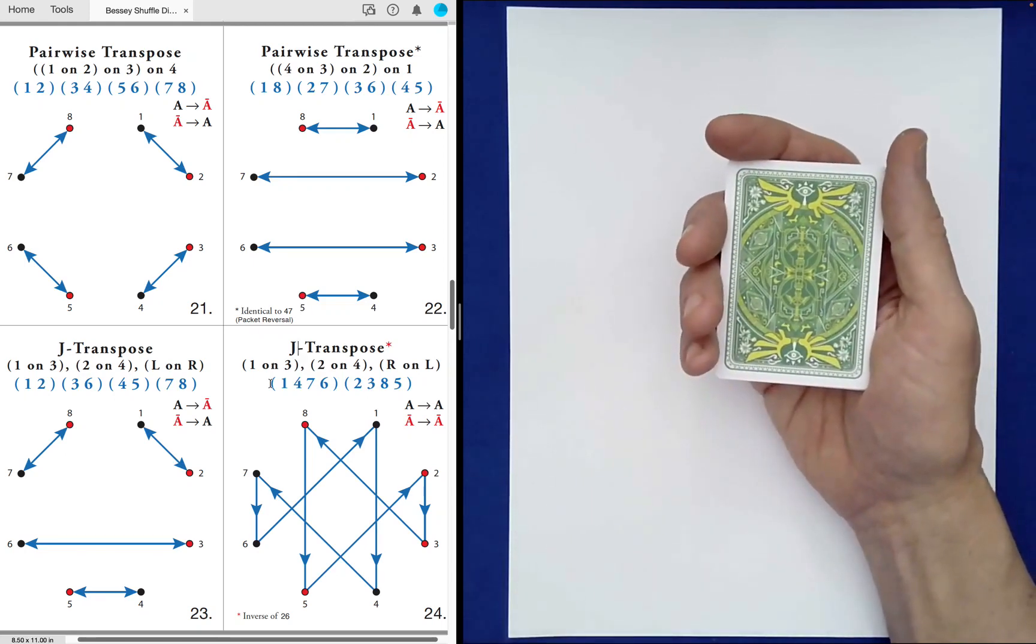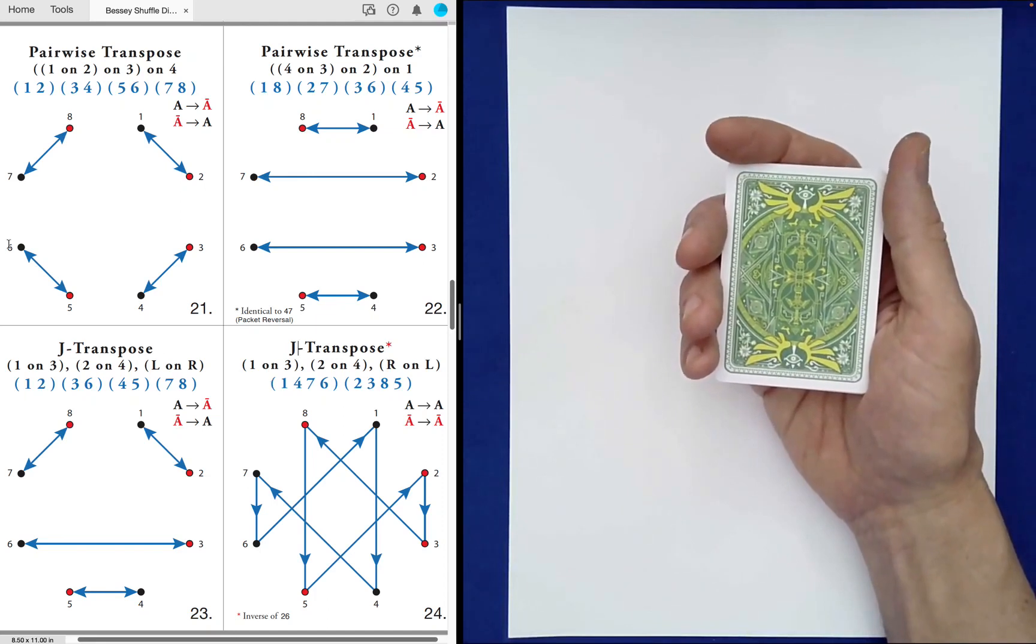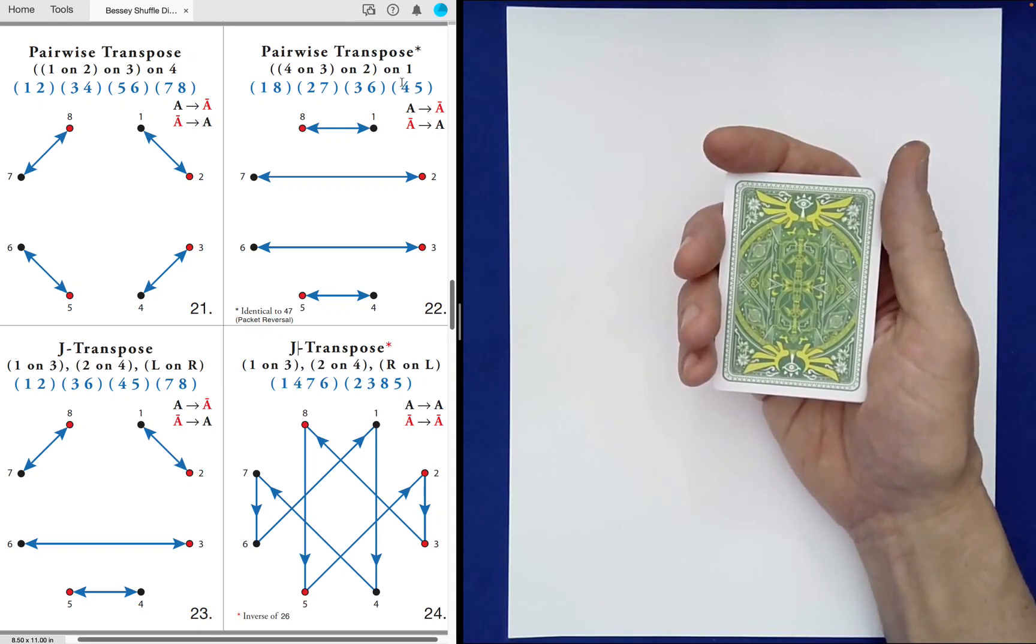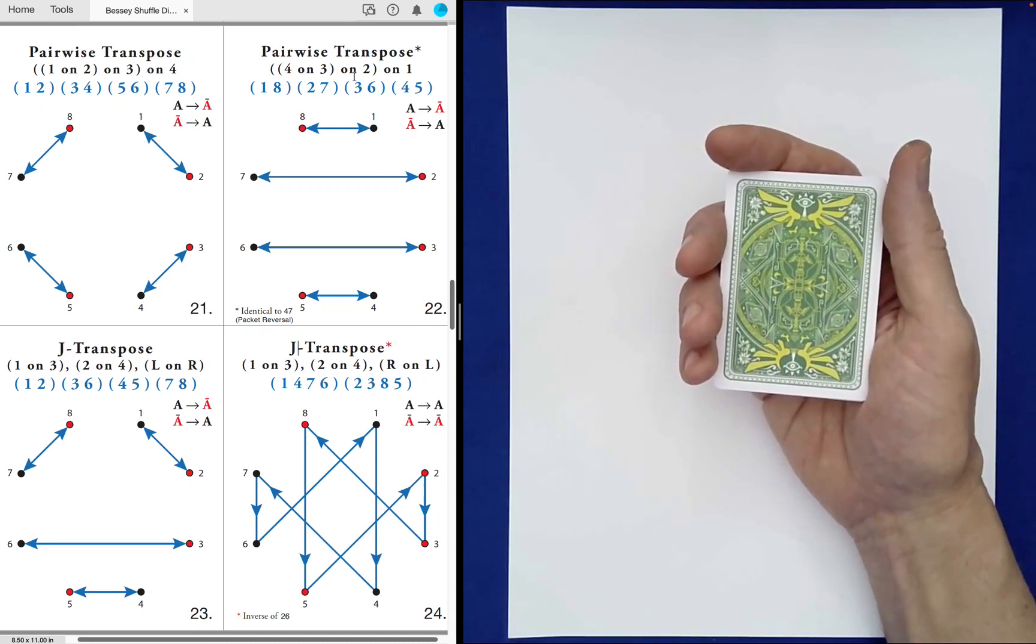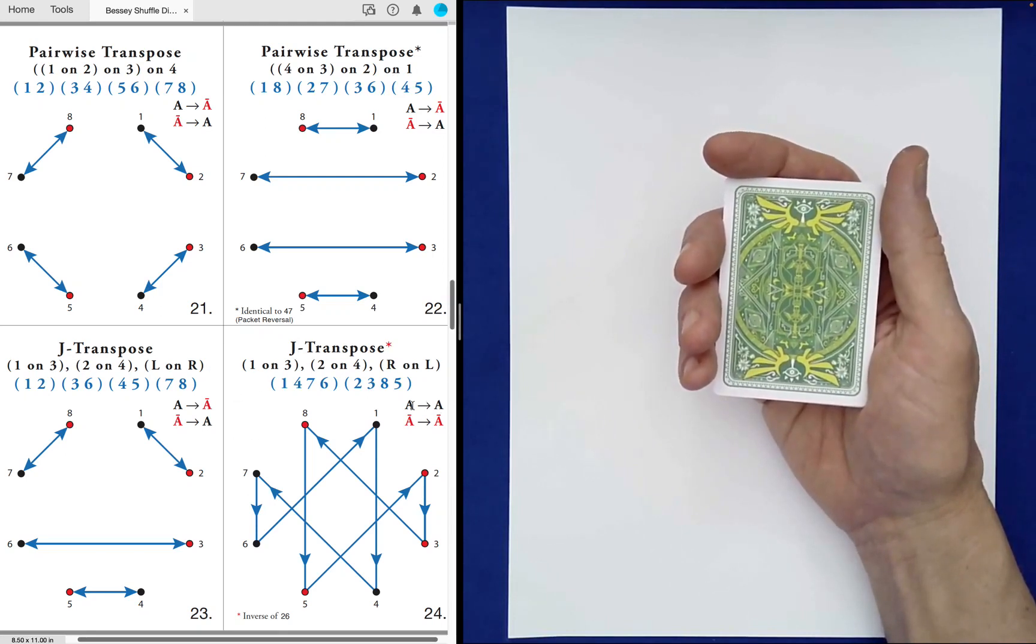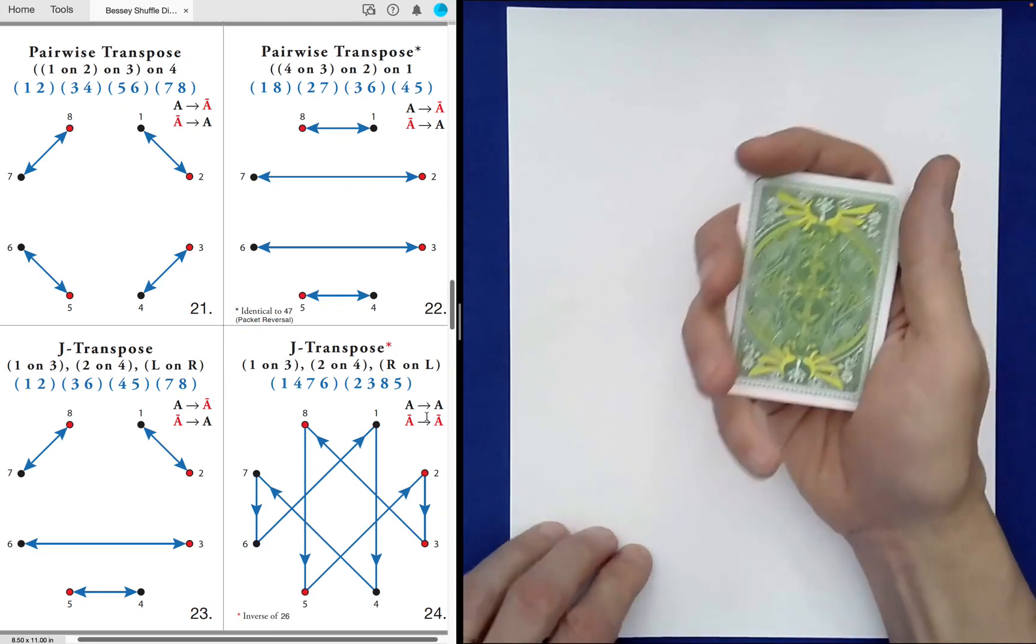And as we've talked about today, some of these shuffles invert, like the first one here, that inverts the sequence or the packet. This one does as well, number 22. 23 does as well, but 24 does not invert it. And so, at this point, you can perform as many of these pairwise transpose as you like.